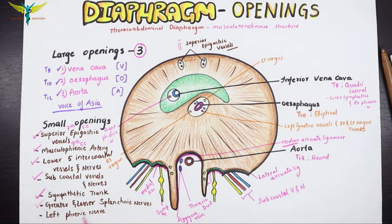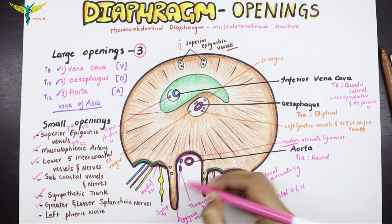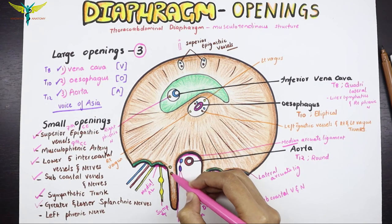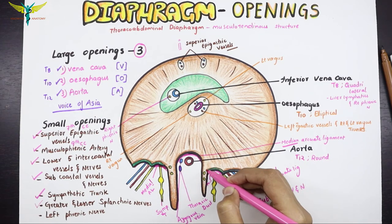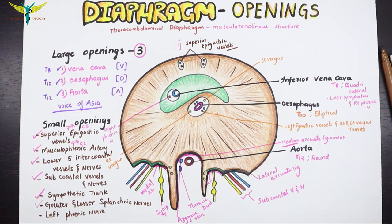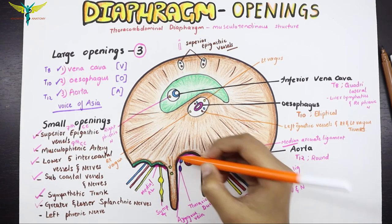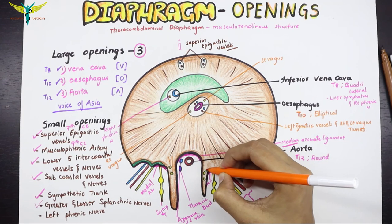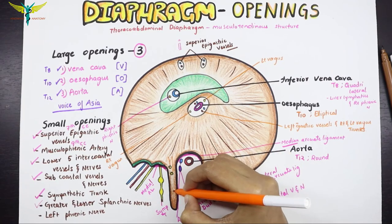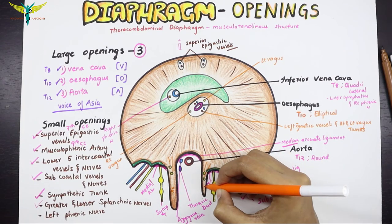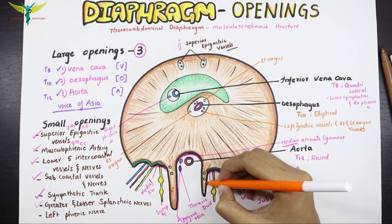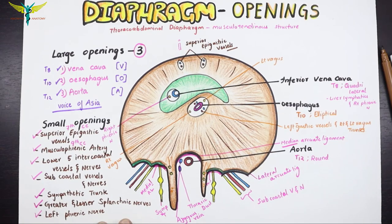The greater and lesser splanchnic nerves pierce each crus of the diaphragm — these are the right and left crura of the diaphragm, and you can note the greater and lesser splanchnic nerves here on the right and left crura. The left phrenic nerve pierces the left cupola of the diaphragm.